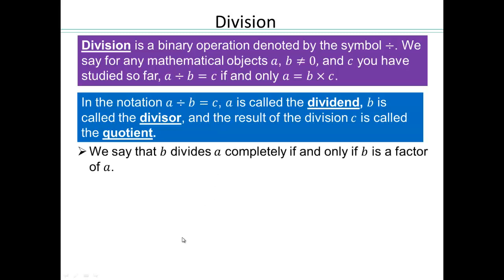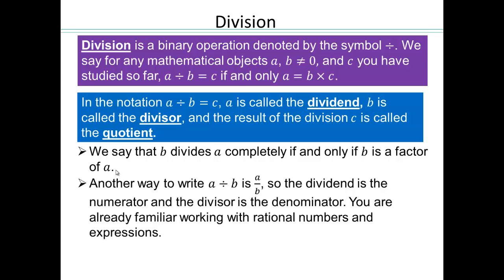We say that b divides a completely if and only if b is a factor of a. For example, 2 divides 6 because 2 is a factor of 6 — we can write 6 as 2 times 3. Another way to say that is 6 divided by 2 is 3. Another way to represent a divided by b is a over b. In the 1800s, people also used a little slash, which also means a divided by b.